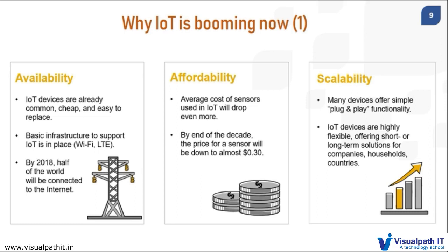All these benefits we can get under IoT. And why is it happening? Obviously, availability of networking. We have proper Wi-Fi and LAN connections available in most places in the world, and by 2018-19, about half of the world was connected to the Internet. Then comes affordability — for example, the cost of one sensor in IoT keeps dropping, and by the end of the decade, the price of sensors will be almost near $0.30. So electronics and embedded electronics are affordable as well.